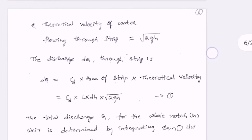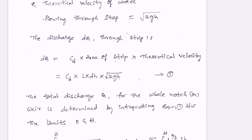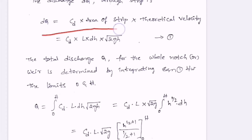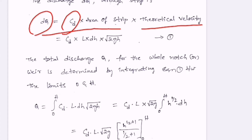The discharge dQ through the strip is given as dQ equal to the area of the strip into the theoretical velocity, and we have to consider the coefficient of discharge CD here. So the discharge through that small elementary strip is dQ equal to CD into L into dH into under root 2gH. Remember, this discharge dQ is only through the strip.